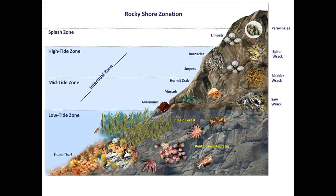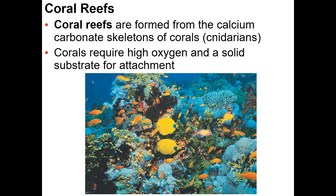Examples of organisms in the intertidal zone include barnacles, which can handle drying out when the tide is out and being submerged when the tide comes in, crabs that move in and out with the water, and kelp that grows in the lower zone. Coral reefs are formed from coral, which are actually animals — similar to an upside-down jellyfish — that build calcium carbonate skeletons.